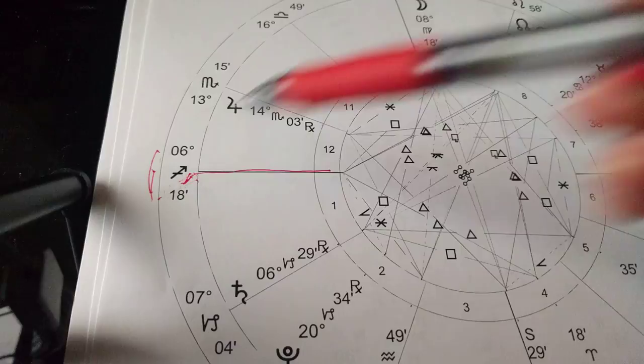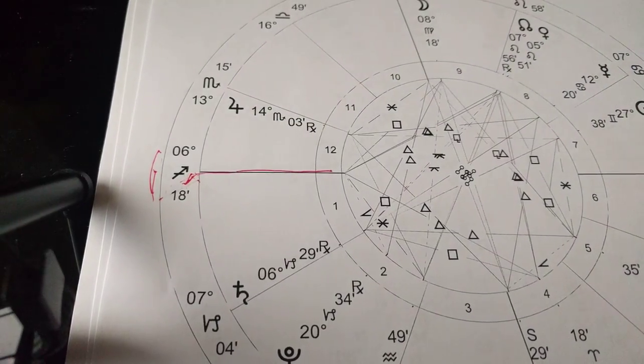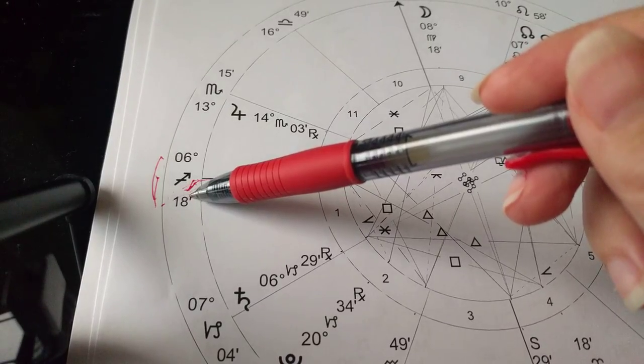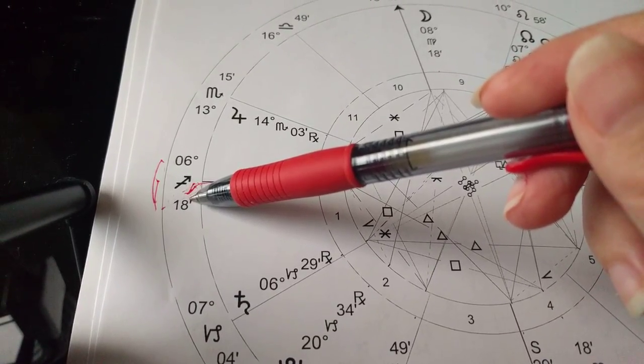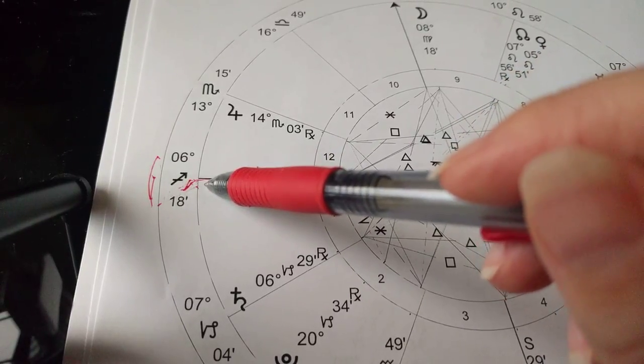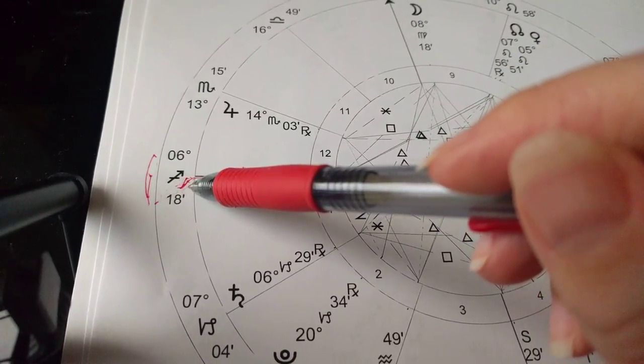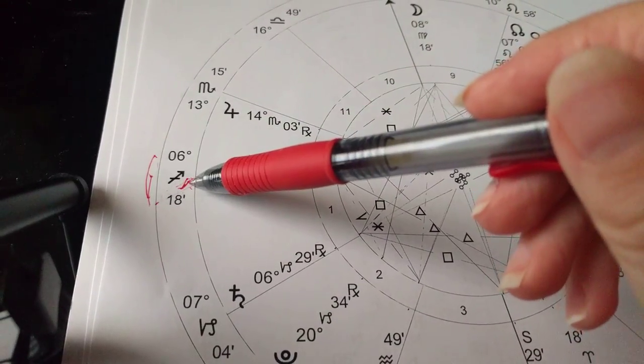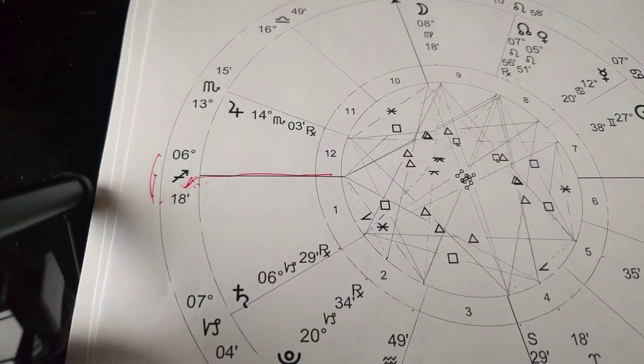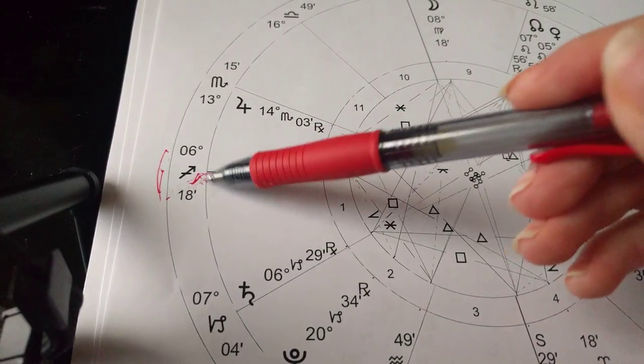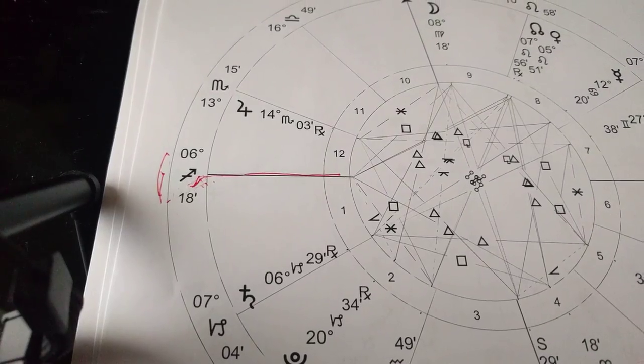So the Sagittarius rising can be that philosopher, the seeker, the one who asks questions, who sees the bigger picture, who actually comes across with a sense of positivity and faith. The other way that Sag can come across is through righteousness or being a know-it-all, someone who has all the answers, somebody who's seen the world and they know everything. That's another energy of the Sag rising.